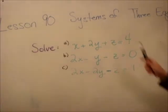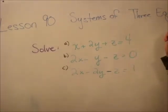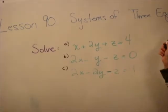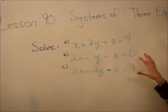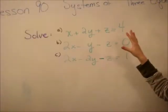We're going to do Lesson 90: systems of three equations. We have three equations with three unknowns, and we have to find x, y, and z.